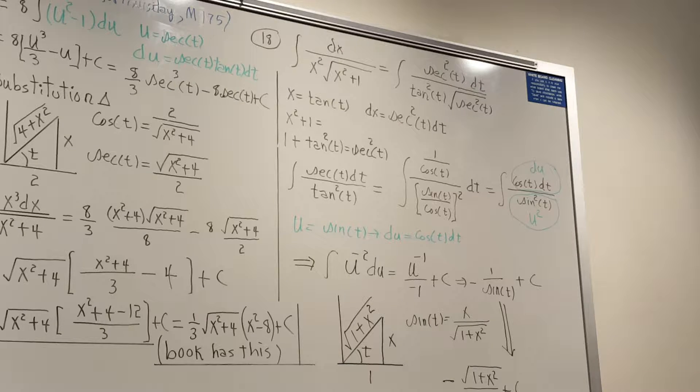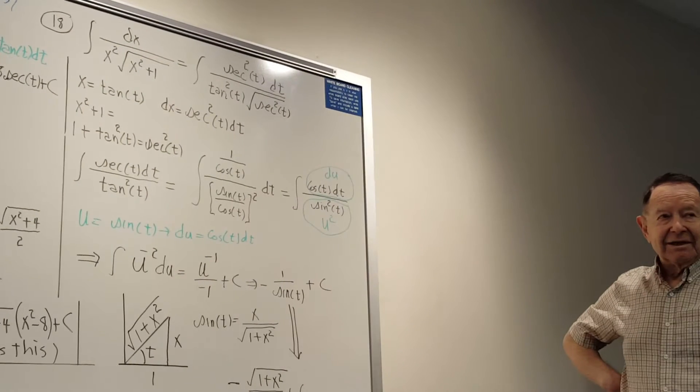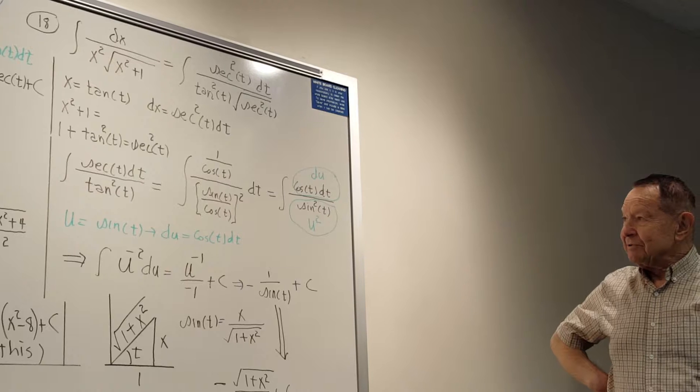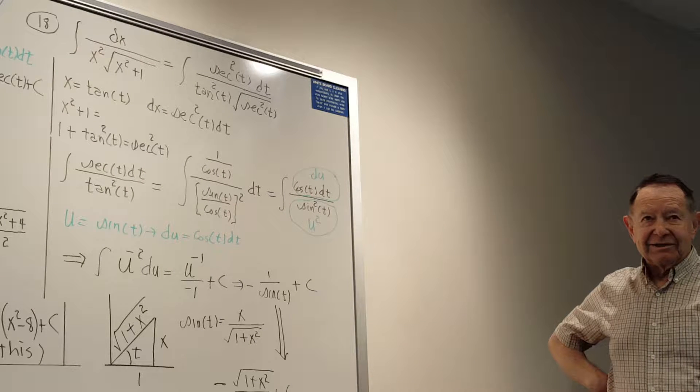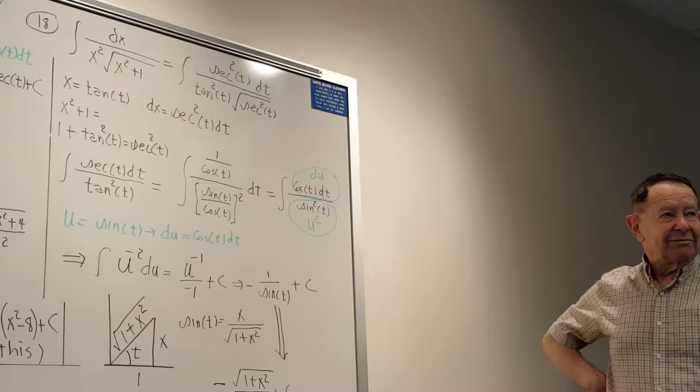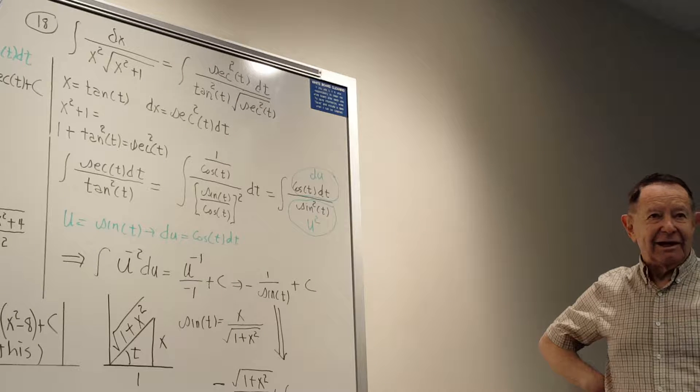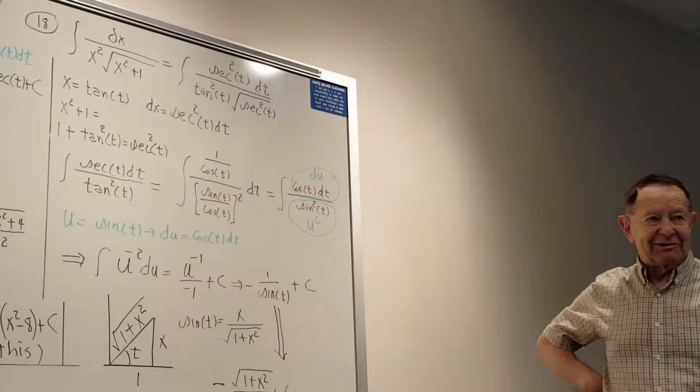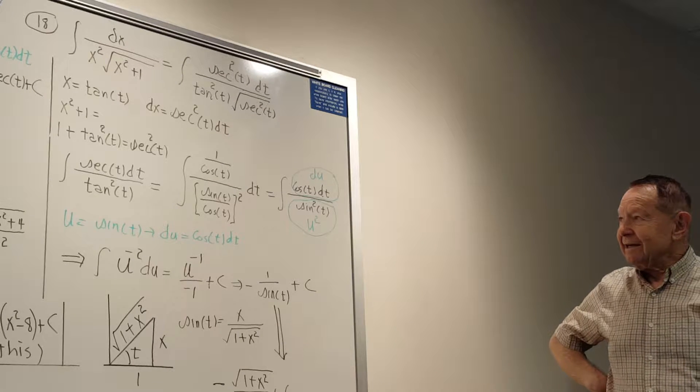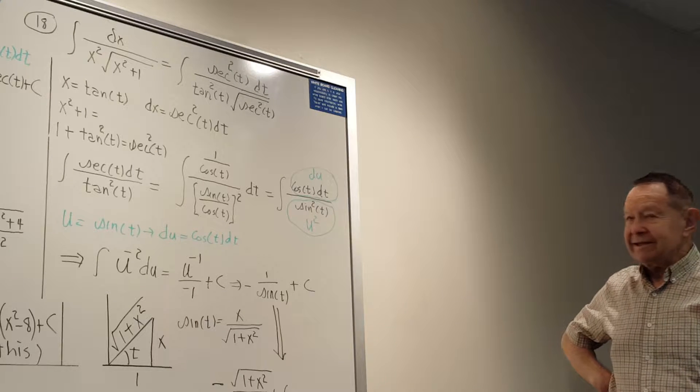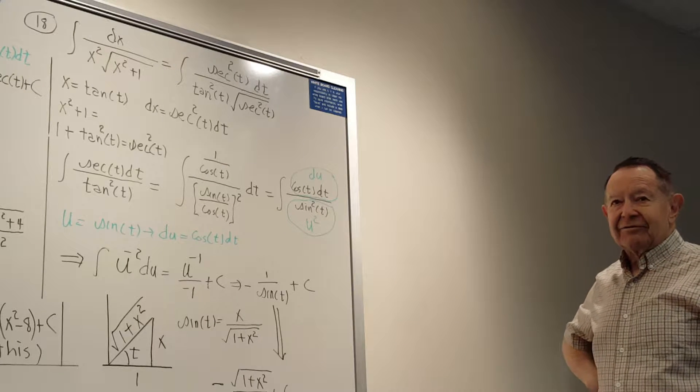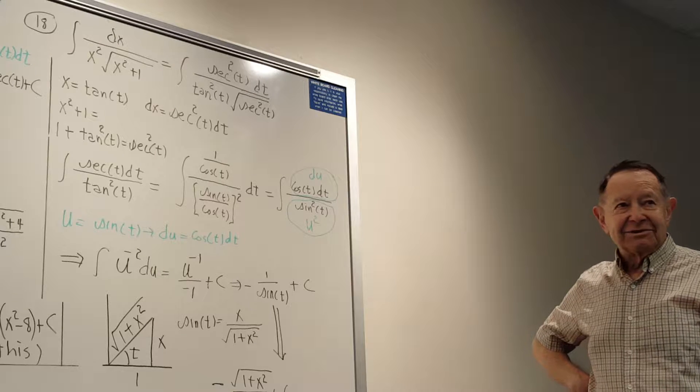Sometimes dealing with the other trig functions becomes more trouble than it's worth. Sometimes you can be too clever by half and outsmart yourself. I think this is one where it's really safer to just convert everything back to sine and cosine.